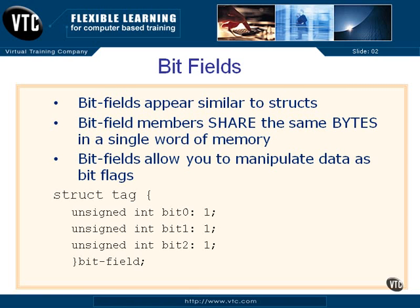Bit fields allow you to create a structure and then allocate out one bit of a word at a time. When you run off the end of a word, you start with another word and start using up more bits of that word. You can have quite a few bits defined in a bit field — especially if you're doing, say, the flags of a TCP/IP header, where you have a couple of bytes of bit data that you want to be able to look at individually. So it's a lot easier than masking, XORing, ANDing, and things like that that we saw way back in the beginning.